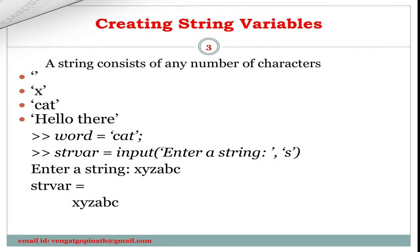First, we will discuss about creating string variables. A string consists of any number of characters. Here the example: empty string, x equals 'cat', 'hello there', which is enclosed by single quotation. A substring is a subset or part of a string — for example, 'there' is a substring within the string 'hello there'. Characters include letters of the alphabet, digits, punctuation marks, white space, and control characters. Control characters are characters that cannot be printed but accomplish a task, such as backspace or tab.